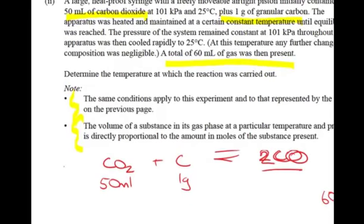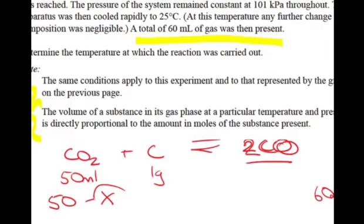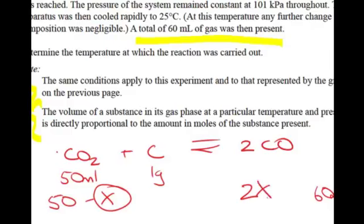If we lose whatever amount of CO2 we lose, which is X, the CO is going to be times 2. So one mole creates 2, so if we lose whatever value of X we lose, the CO is going to be double that, so it's going to be 2X.